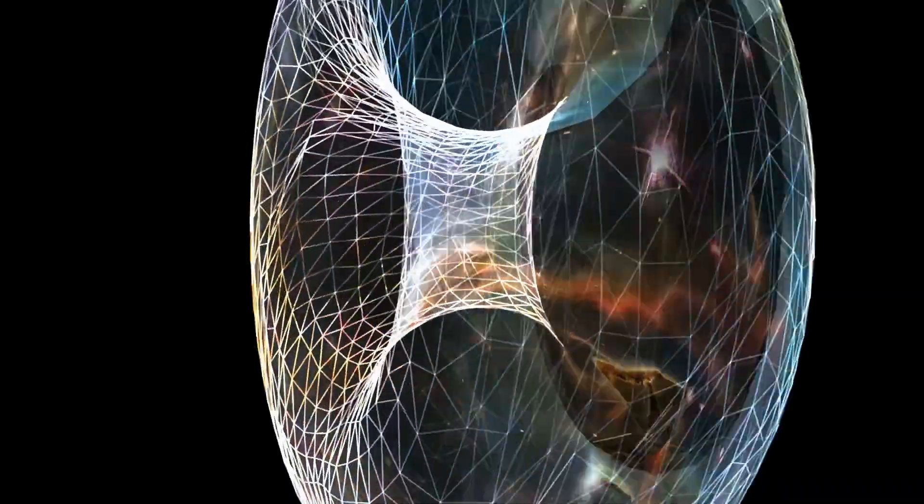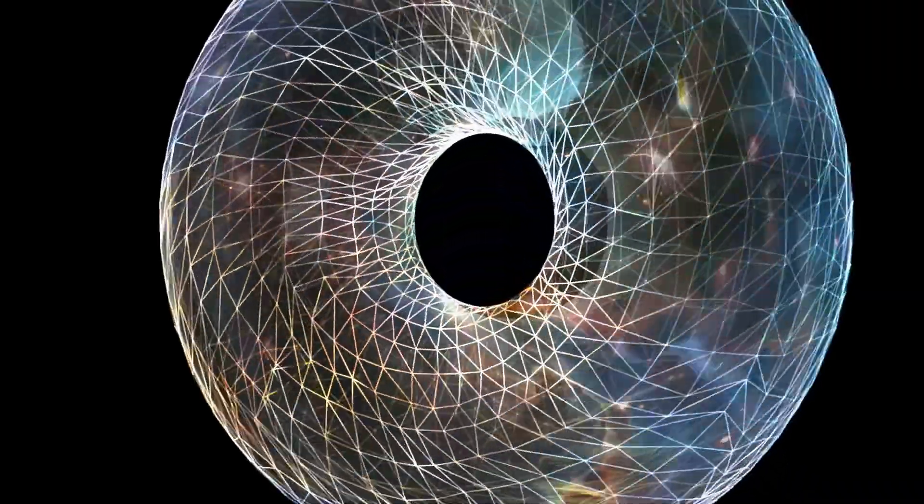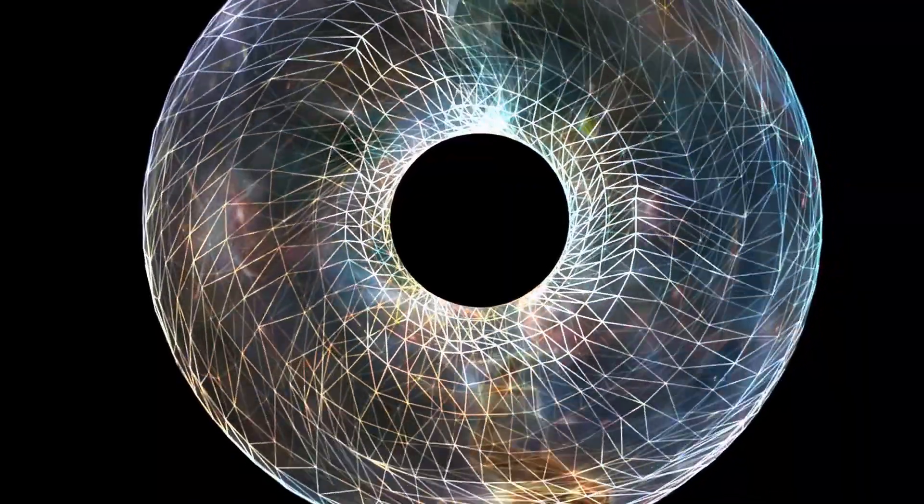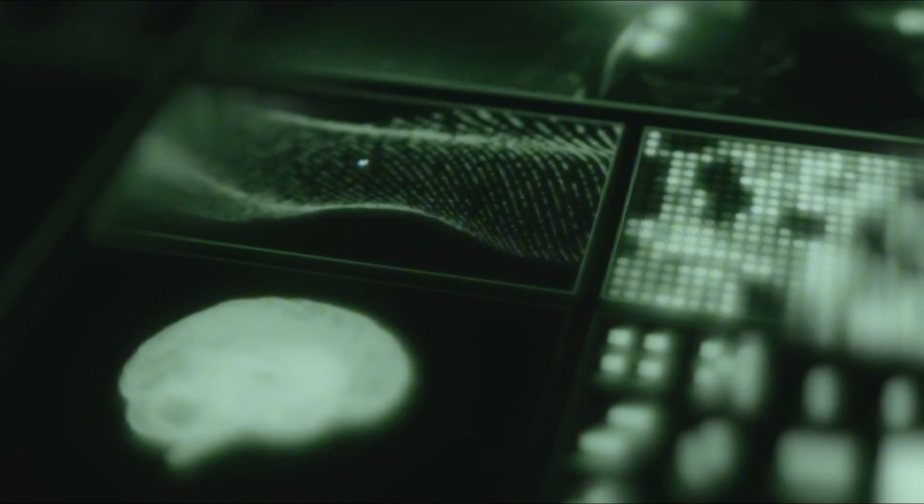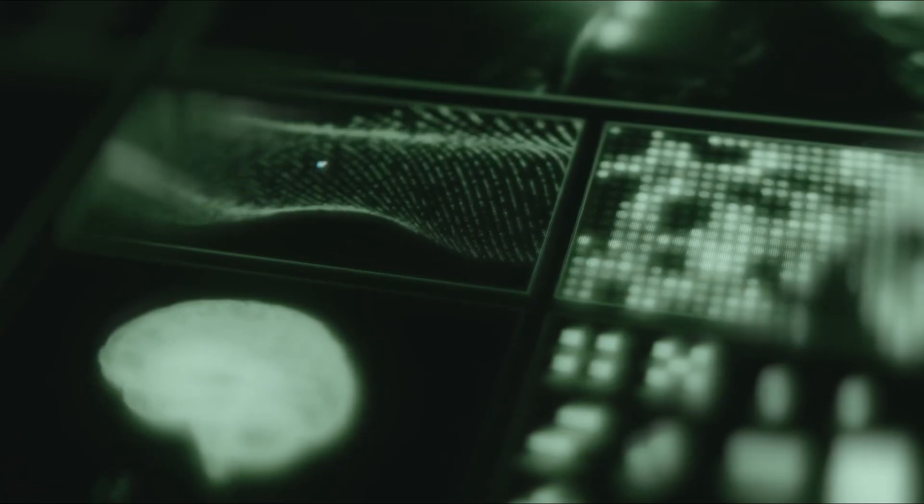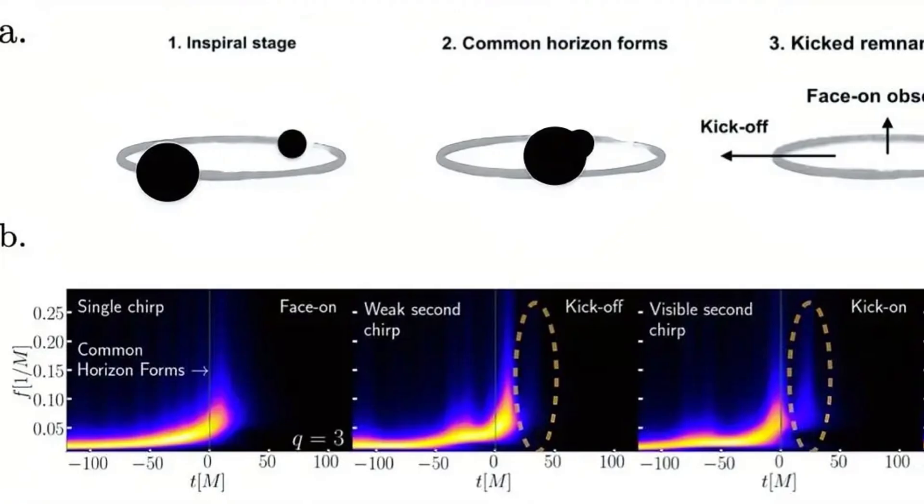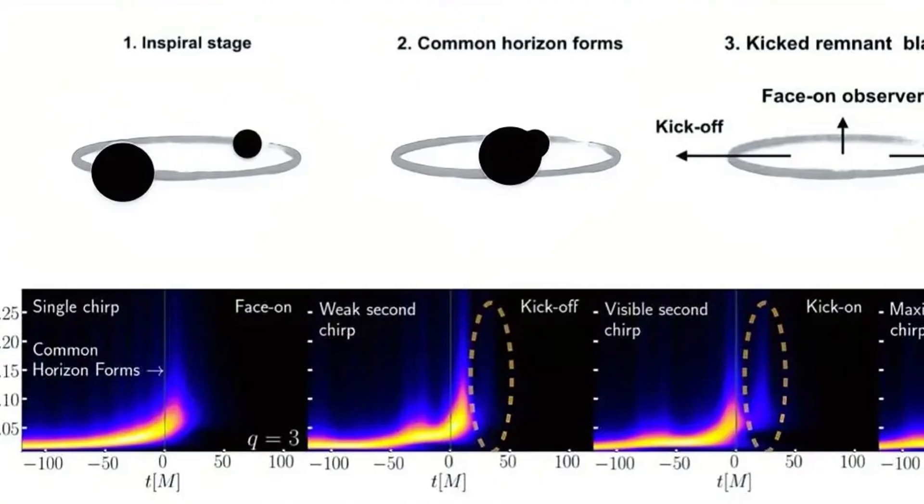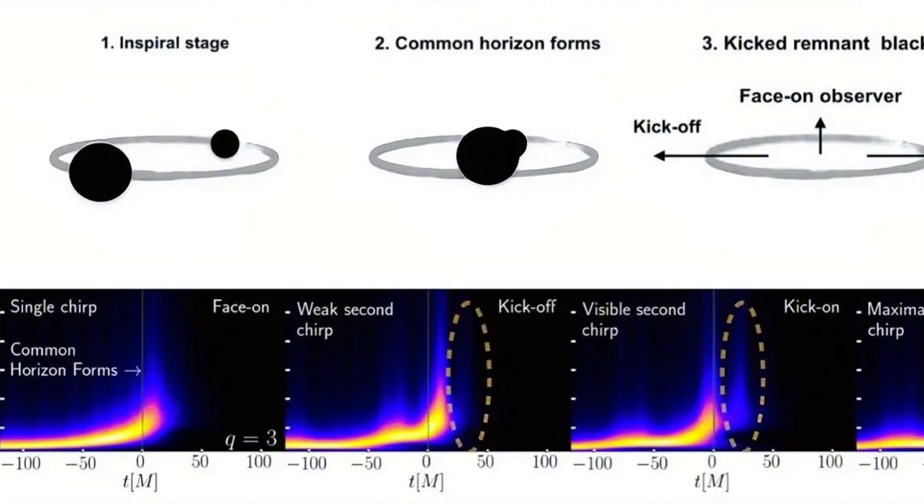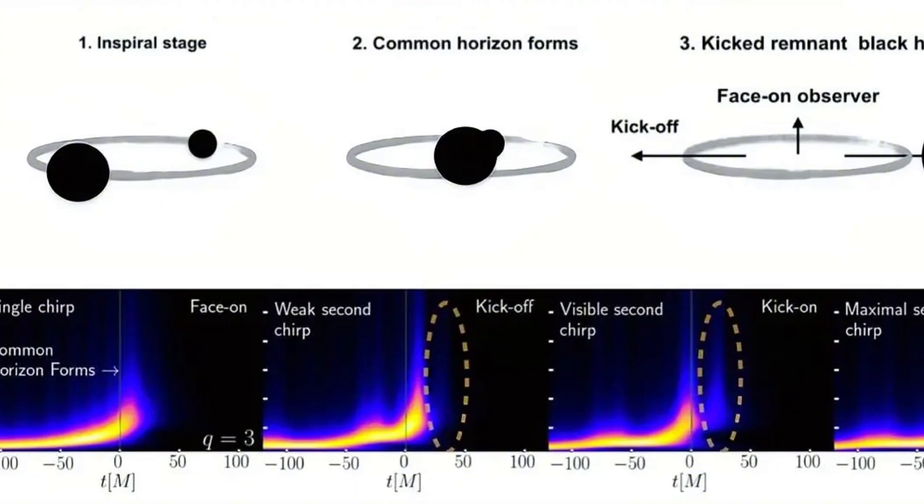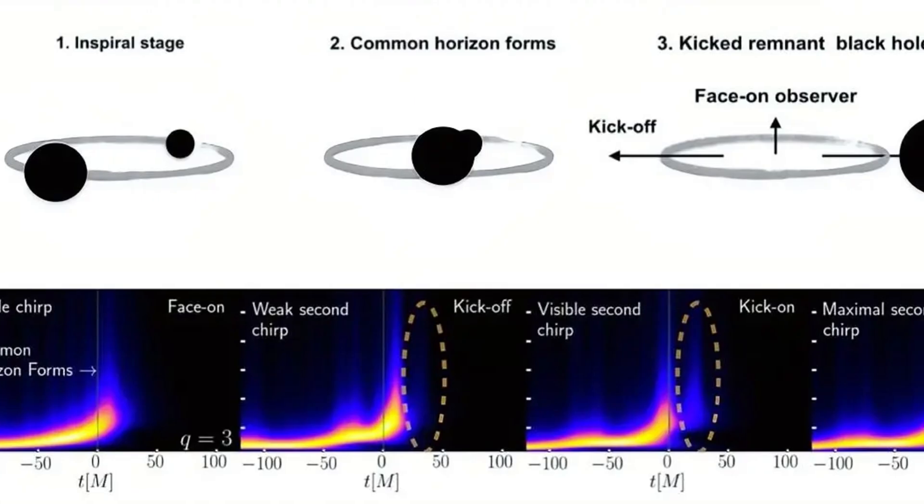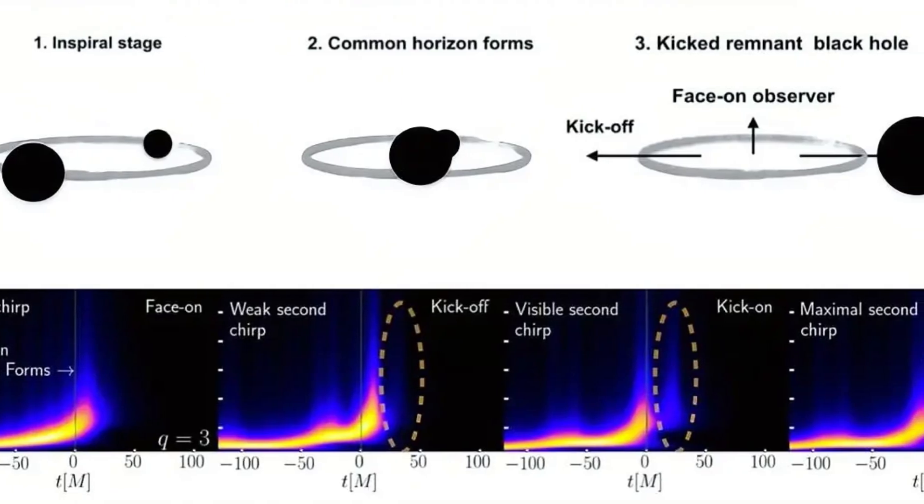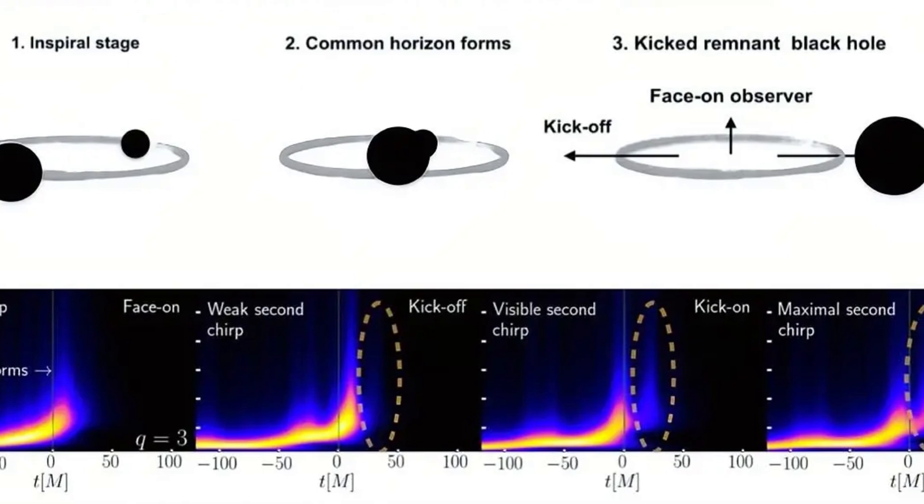But the most damning piece of evidence, the clue that truly sent theorists scrambling to their whiteboards, was buried in the technical detail of the waveform itself. The signal was fundamentally incomplete. A complete black hole merger signature has three distinct iron-clad parts. There is the inspiral, the rising chirp as the black holes draw closer and closer, faster and faster, warping space-time around them. There is the merger, the violent peak of the signal at the moment of impact. And then, most critically, there is the ringdown.